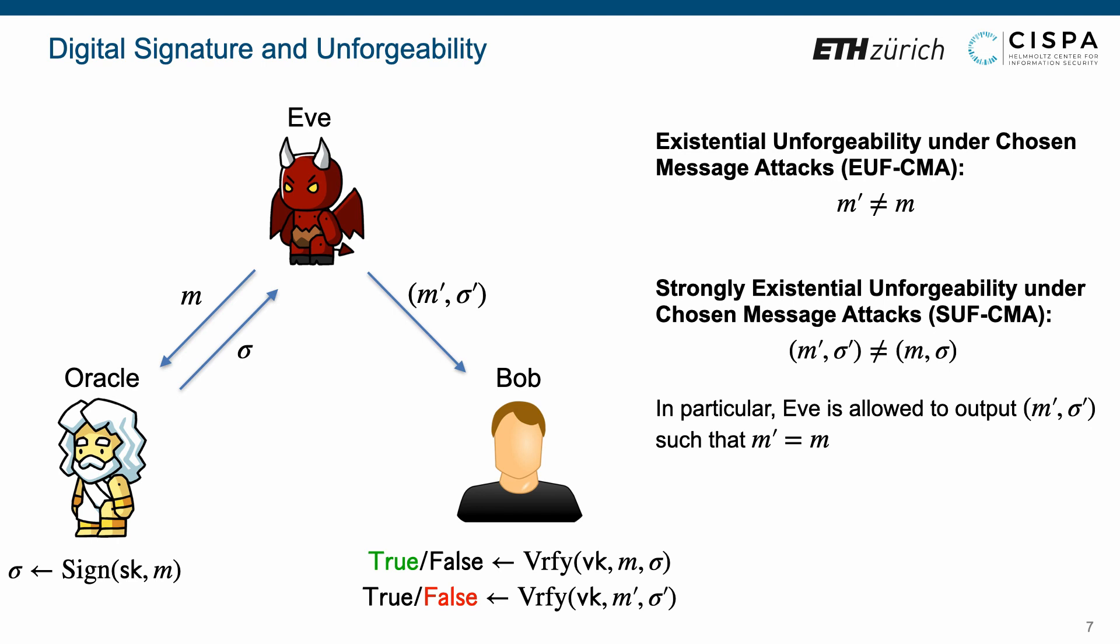In particular, Eve can win the strong unforgeability experiment by forging a new signature sigma prime for a message M' equals M that has already been queried.